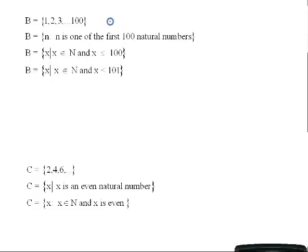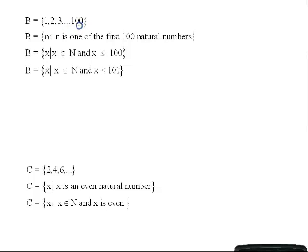Some sets are rather large and it's either not practical or impossible to list all of the elements. So we list the first few elements to establish a pattern. For example, set B = {1, 2, 3, ...} with the pattern continuing up to and including 100. This is roster notation, but we wouldn't want to list all 100 elements, so we list enough to show the pattern and then write the last number at the end of the list.